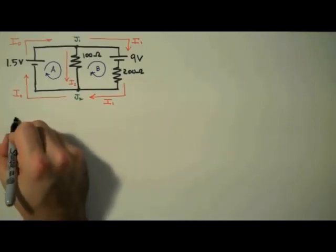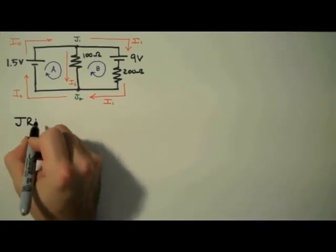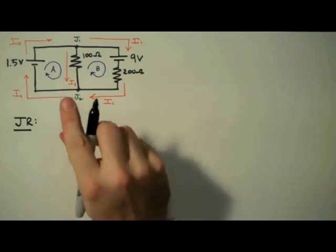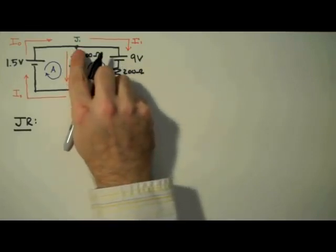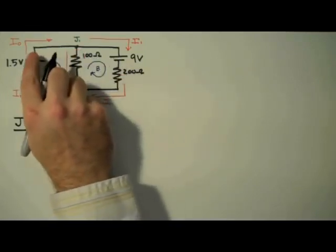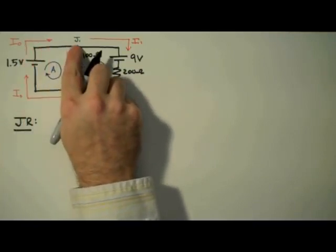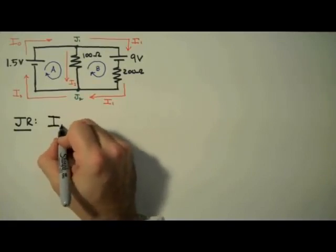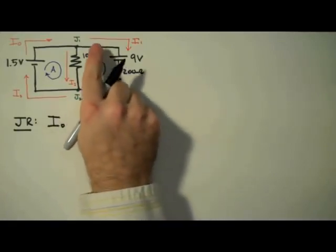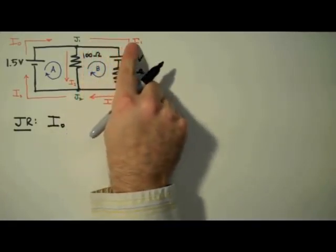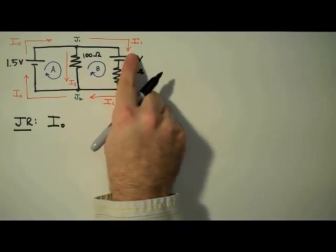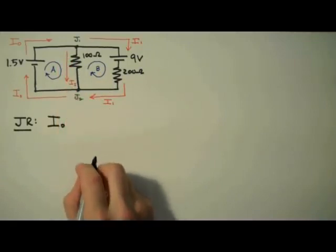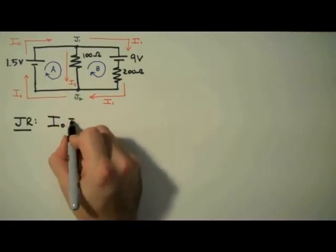Now that we've labeled our circuit, we're going to apply the junction rule. The junction rule states that the sum of the currents into a junction is equal to the sum of the currents out of a junction. So we're going to apply this to junction 1. The current in is just I0, so on the left-hand side of the equation I'm going to write I0. And the currents coming out of that junction, we have I1 and I2, so on the right side we'll have I1 plus I2.